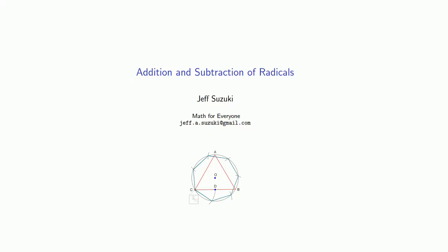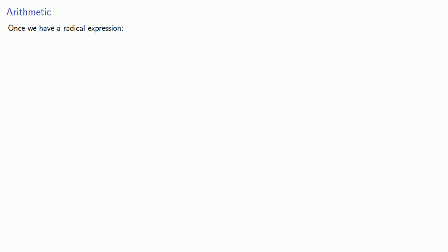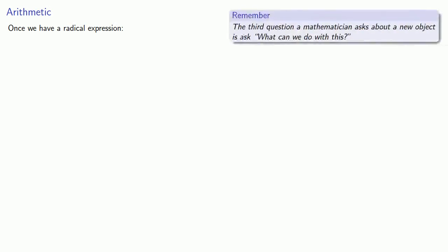So what can you do with a radical? How about adding and subtracting radicals? This is part of a general mathematical process. The third question a mathematician asks about a new object is, what can we do with this? Once we have a radical expression, we need to consider the arithmetic of the expression.